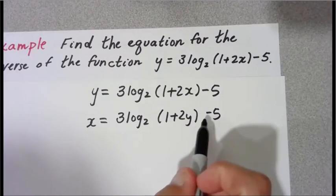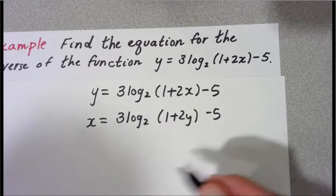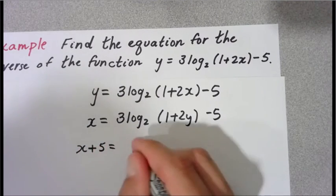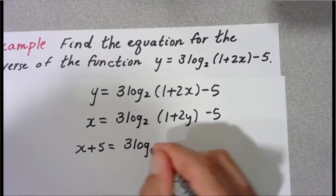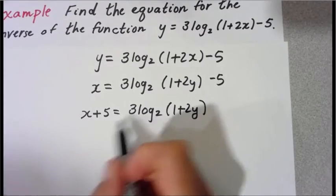Now there's all this stuff here. We've got a minus five, division three. The idea is to get the log alone. So let's add five to both sides. Okay.